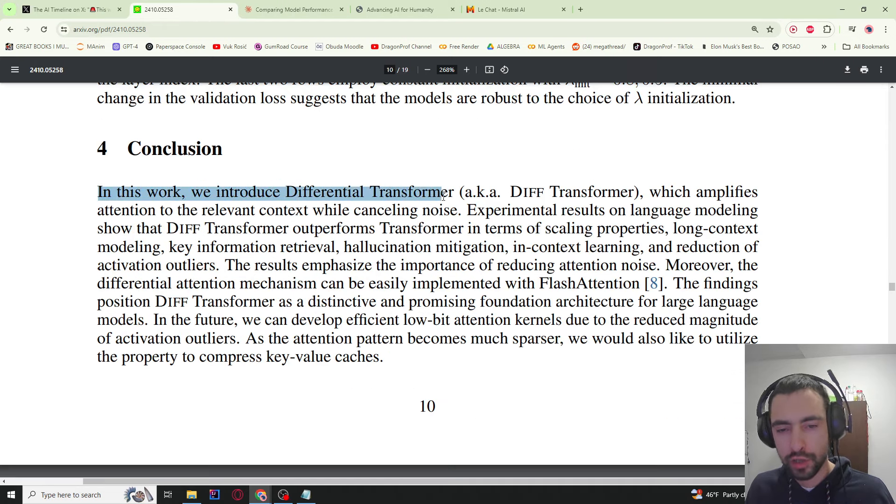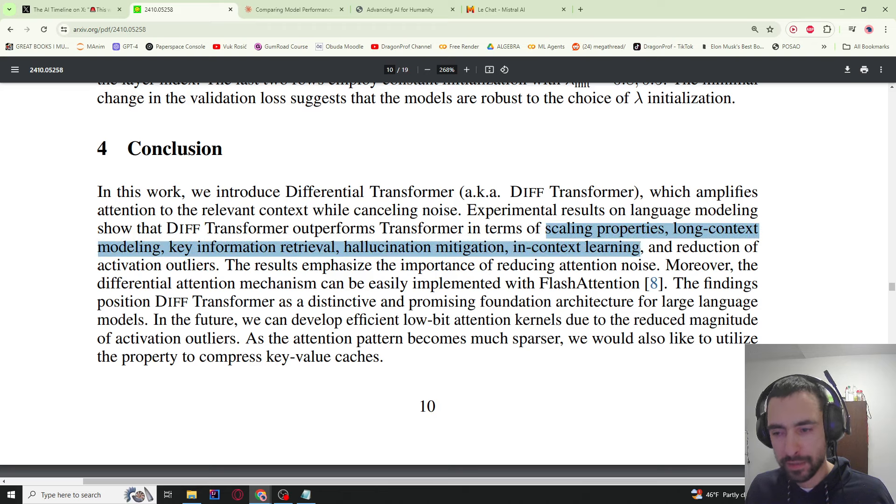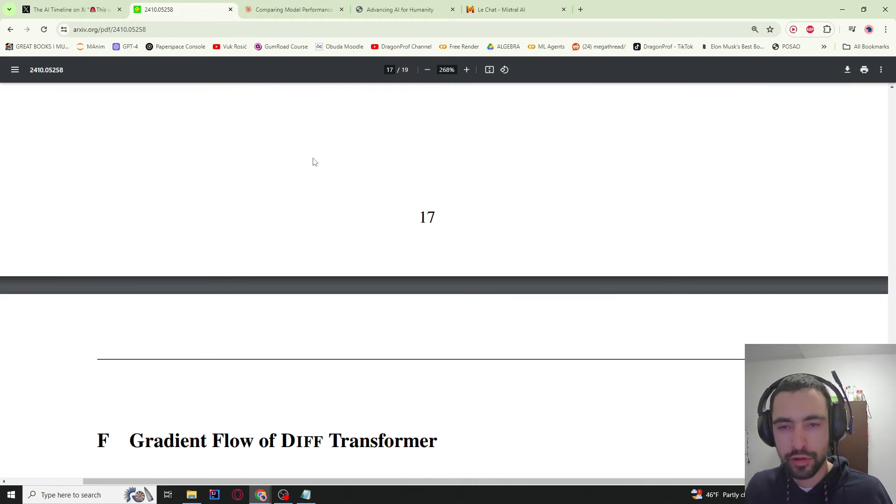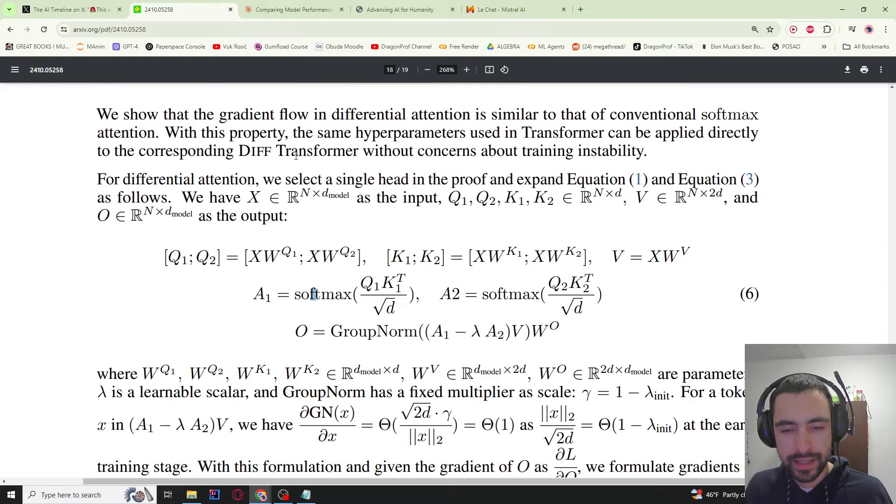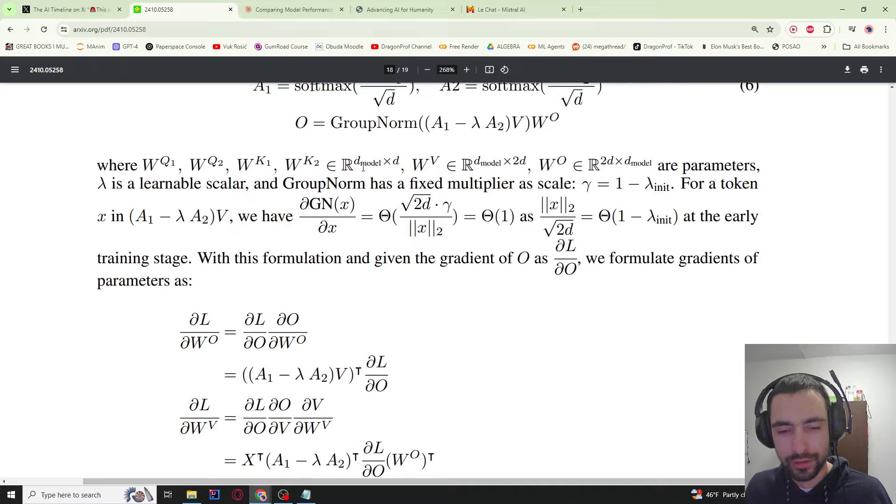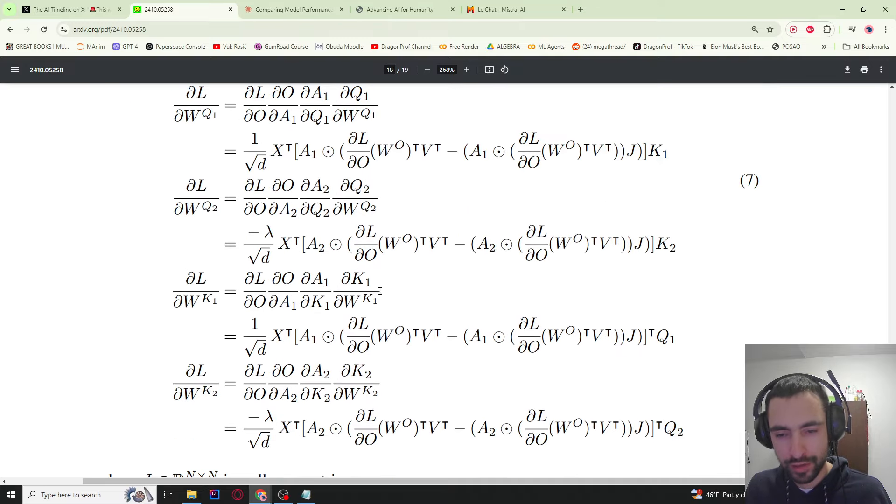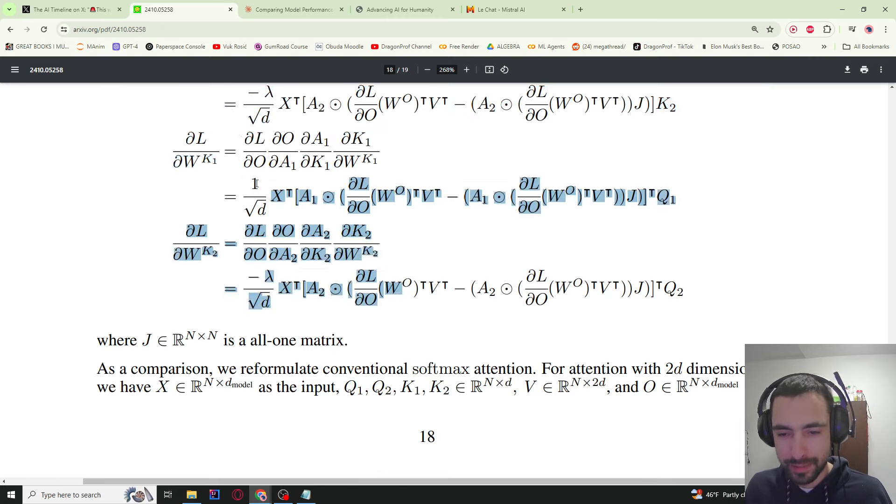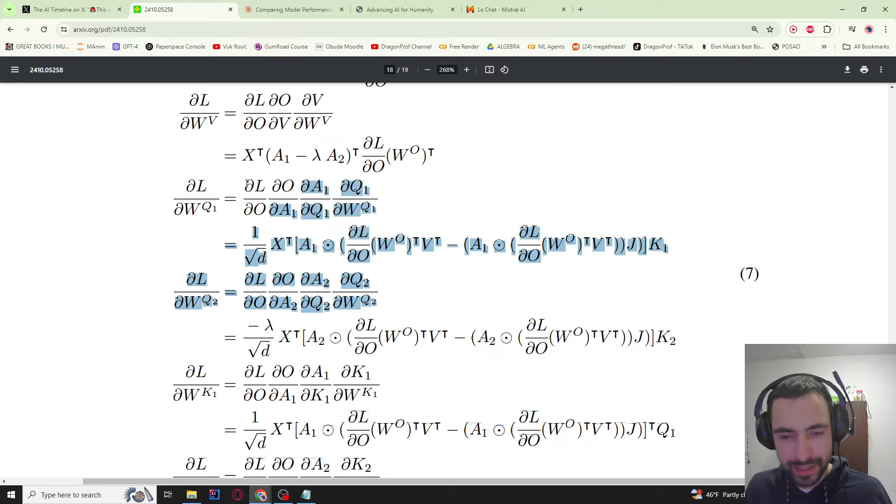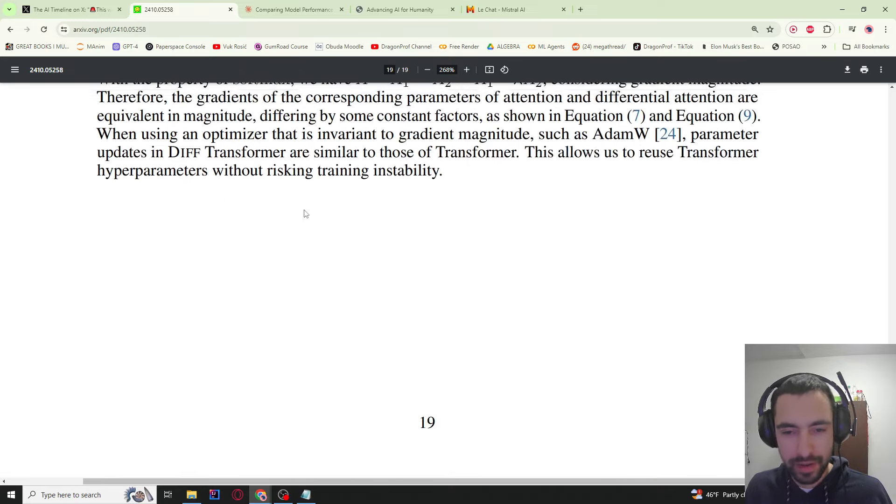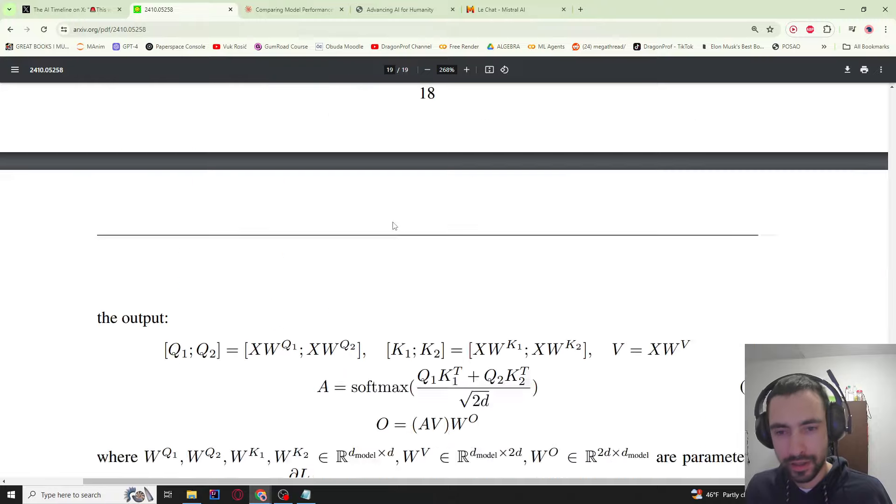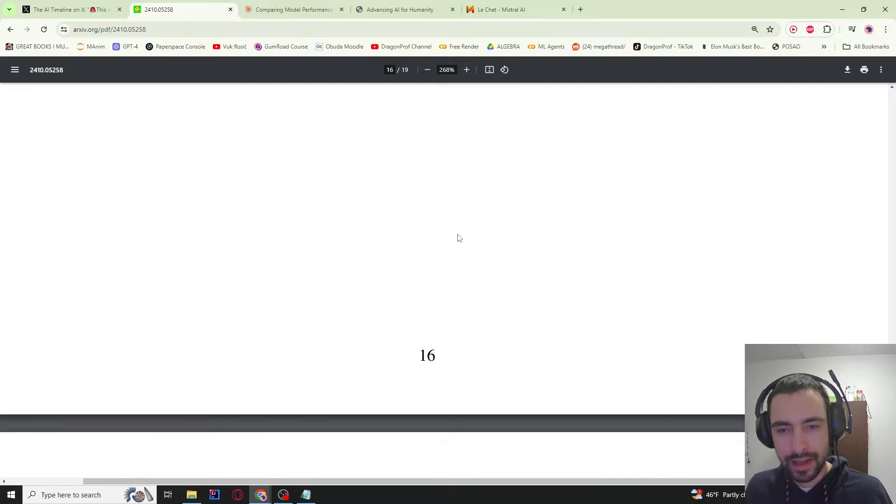Conclusion: in this work we introduce differential transformer which amplifies attention to the relevant context while canceling noise. It has all of the benefits that we explained and also can be easily implemented with flash attention. Now that's it, but if you scroll down we can see that they also have the gradient flow of this differential transformer and all of the mathematics here. If you are interested, I'm not going to be explaining this because I probably need a lot of time to even understand this myself. But I do plan on understanding this as well, so if you want to recreate the experiments you can also scroll down and do it. I think they have code and other graphs and tutorials here.